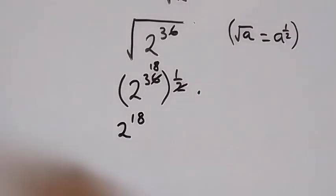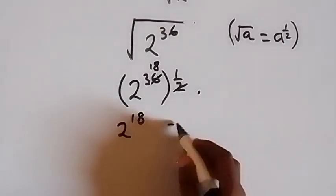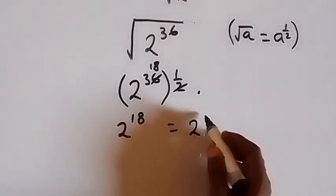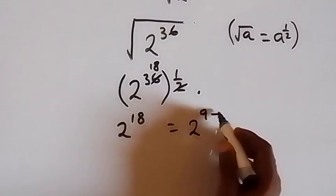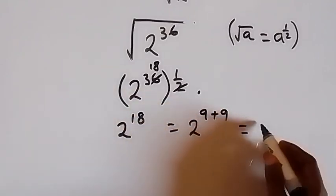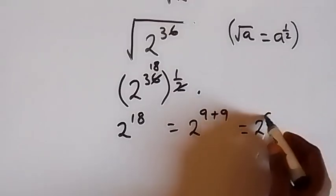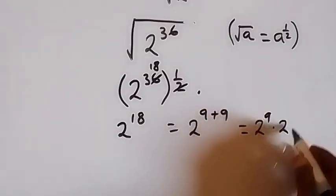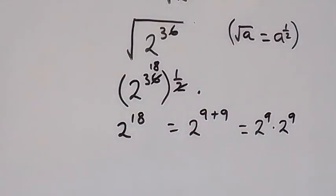Also, we can write this again from the law of indices, and this will be 2 raised to power 9 plus 9. When we separate this, 2 raised to power 9, then it's 2 raised to power 9. So that's what we have.